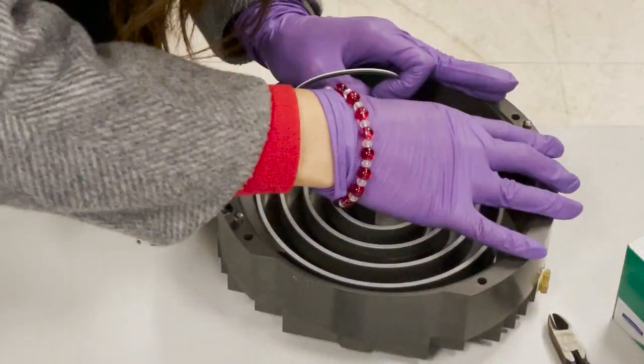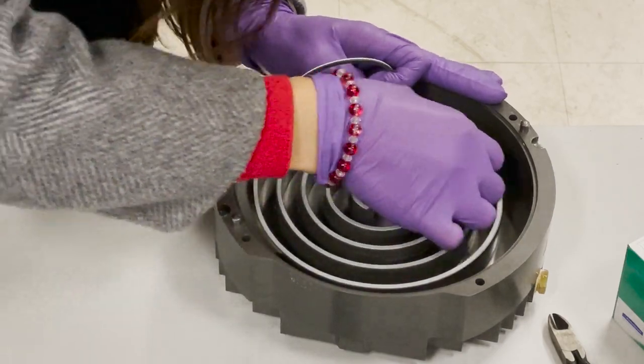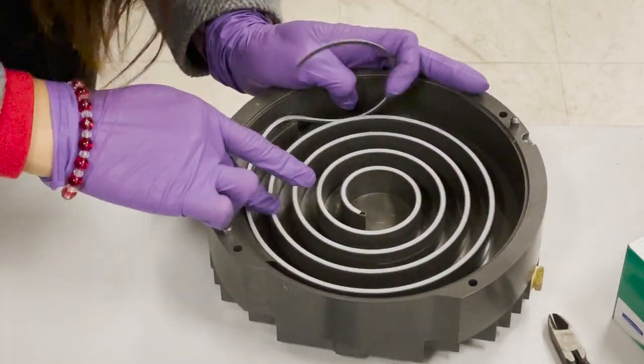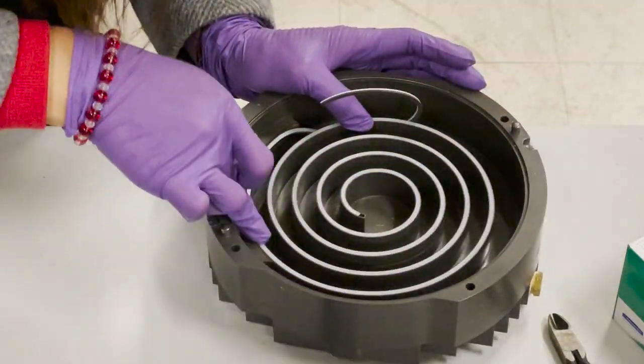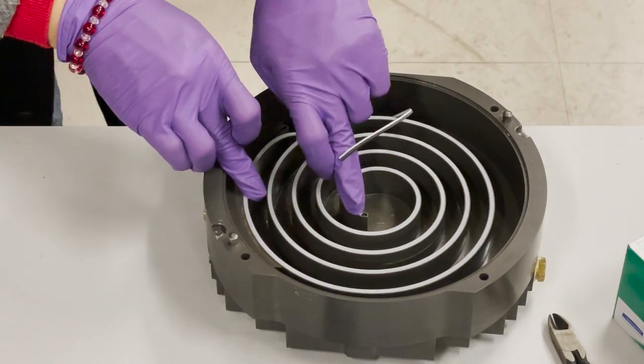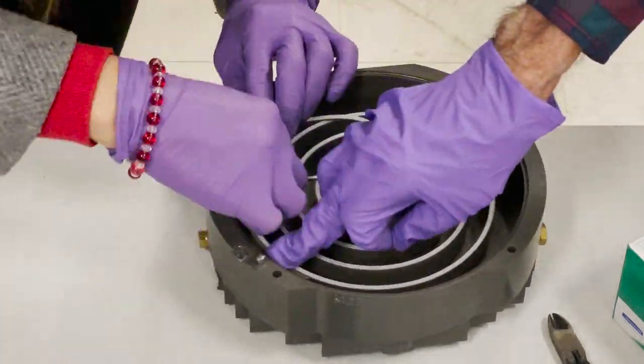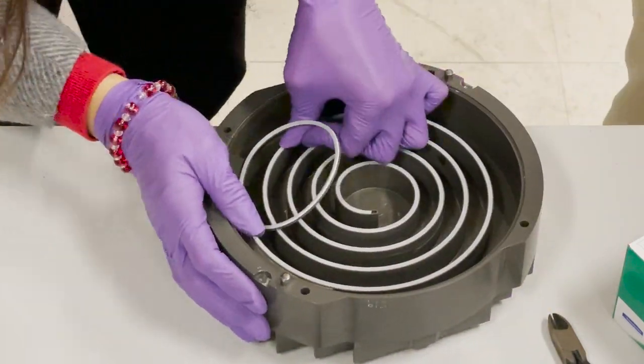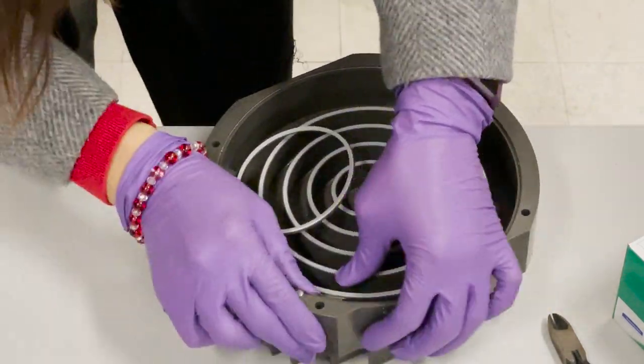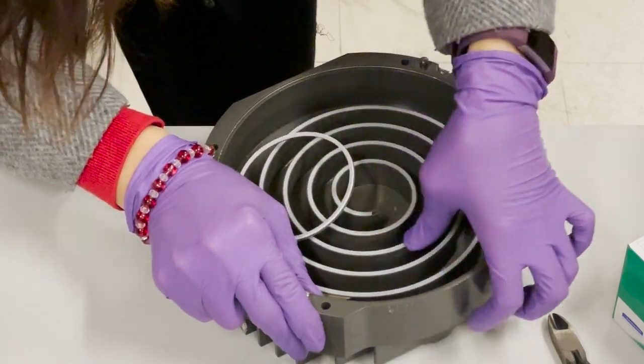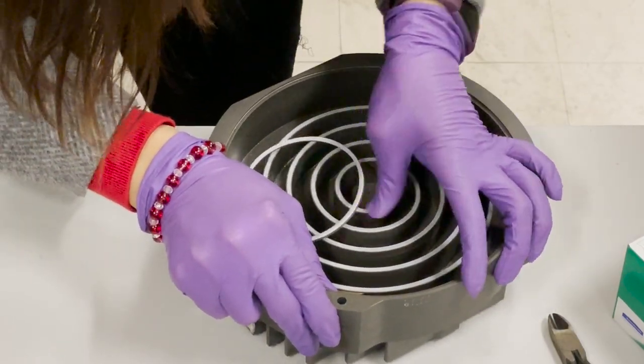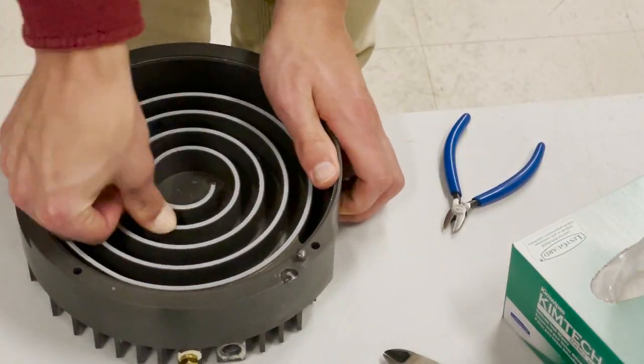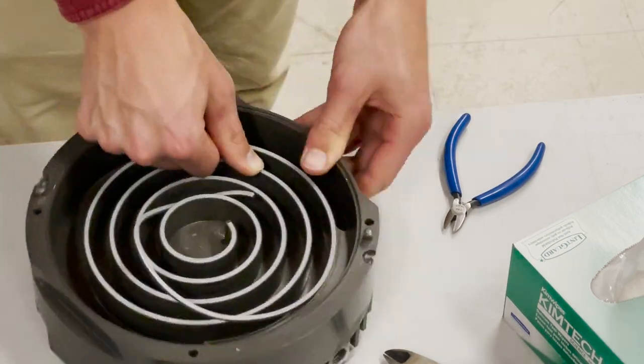So before we cut it off, we really want to make sure that that is in there all the way. And so you actually have to, if that happens, you just lift it up and then start over. So now we've got this tight and in all the way. And cut off at the very end with a couple of millimeters left.